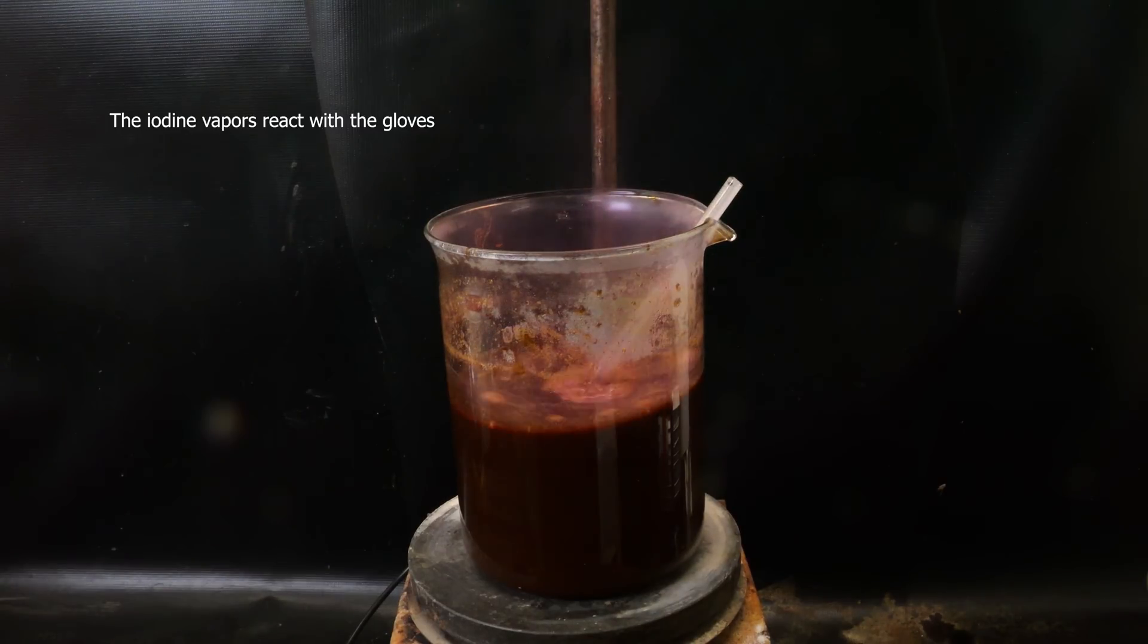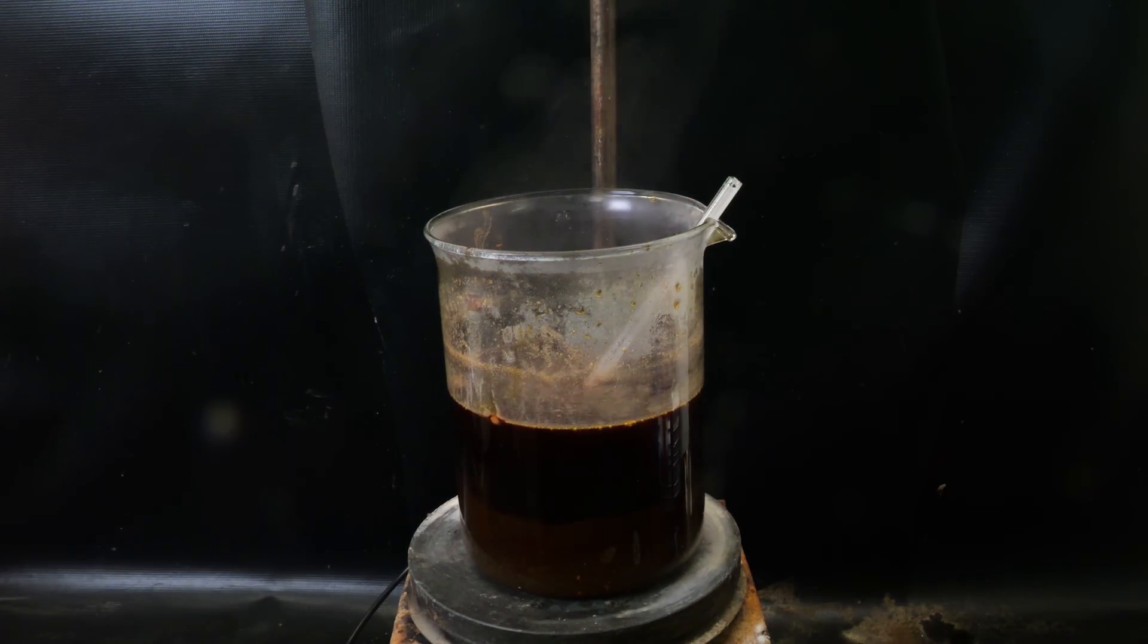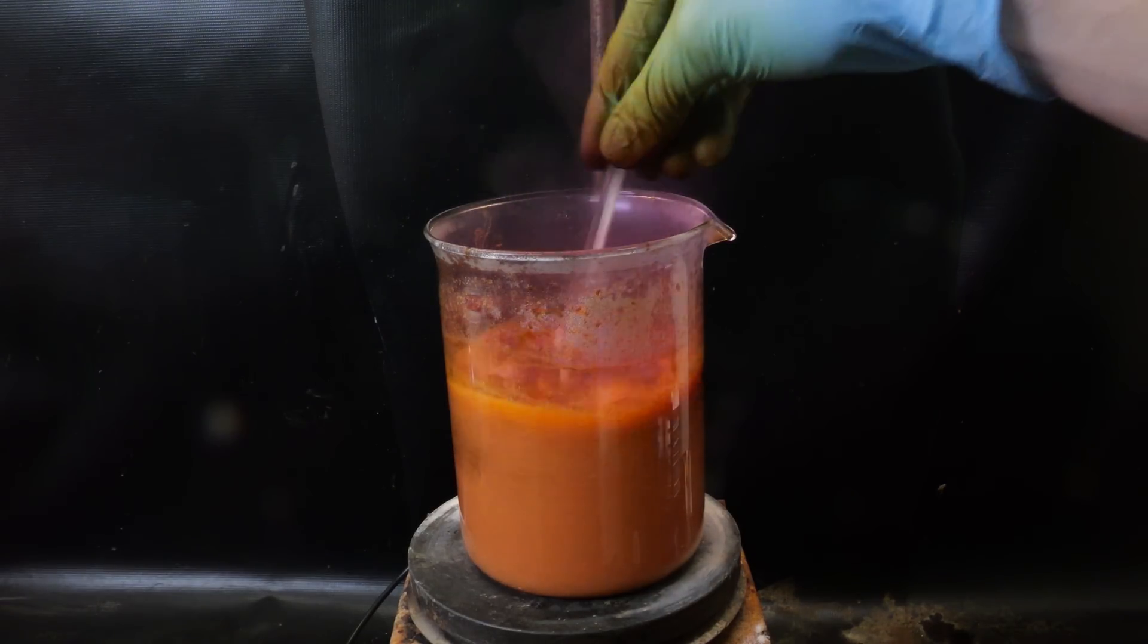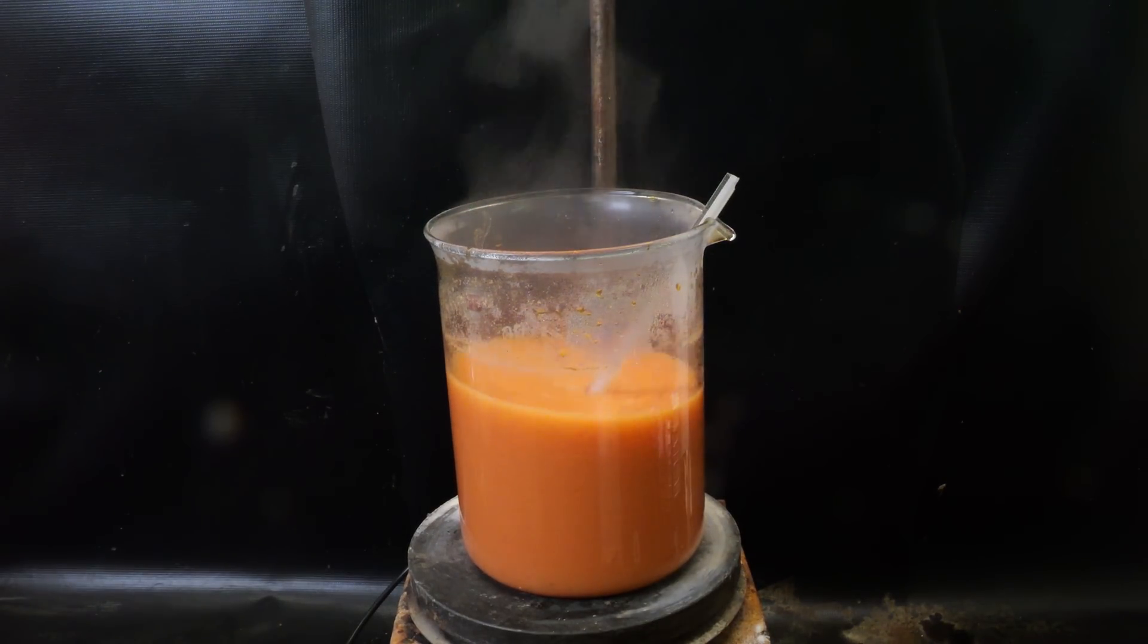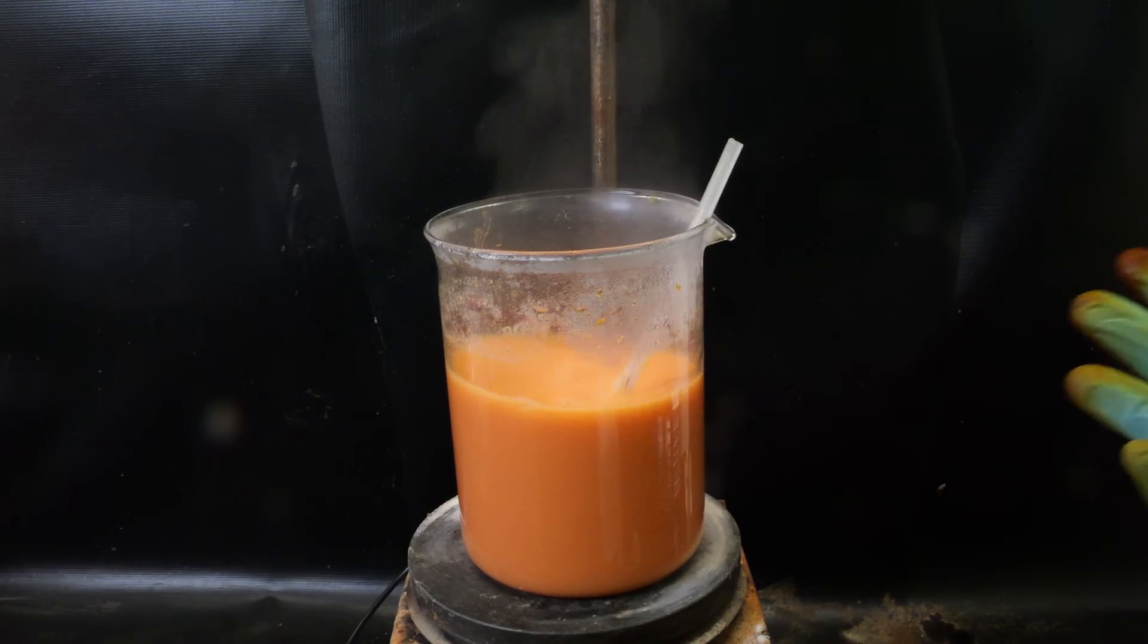When it becomes basic and the dissolved iodine starts being destroyed, it quickly turns transparent and shows the orange color of the suspended hexaiodobenzene. And then I allow it to stand for a minute to let the solid settle.